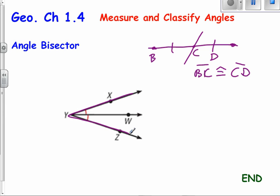You have an angle right here, which we're going to call that angle XYZ. And then if YW is an angle bisector, the ray YW is an angle bisector, then I know that angle XYW is congruent to angle WYZ, WYZ, okay?